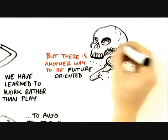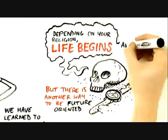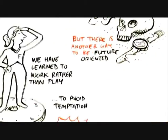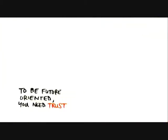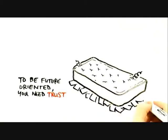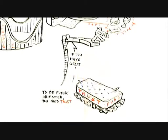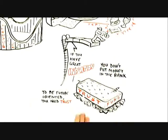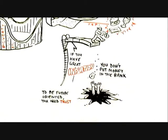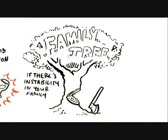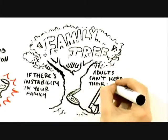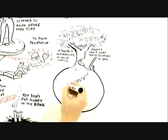But there's another way to be future-oriented. Depending on your religion, life begins after the death of the mortal body. To be future-oriented, you have to trust that when you make a decision about the future, it's going to carry out. If you have great inflation, you don't put money in a bank because you can't trust the future. If there's instability in your family, adults can't keep their promises to you.